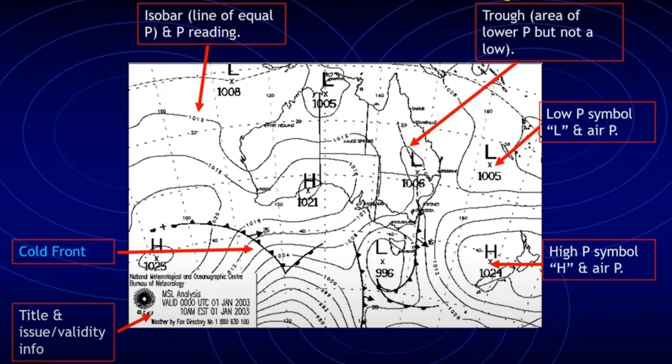As you can see in the picture, we can see first is the title and issue validity info. Next is the high pressure symbol for letter H. The pressure is provided right below the symbol like the indicated number 1024. So that is the atmospheric pressure.